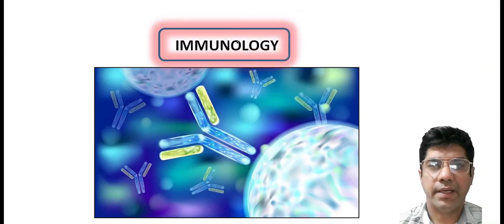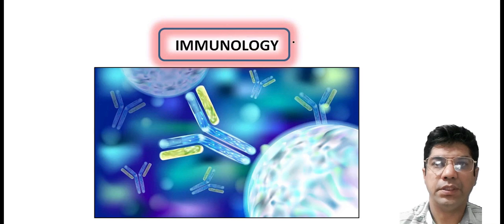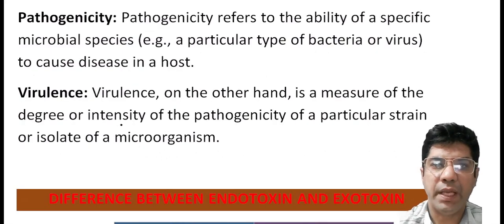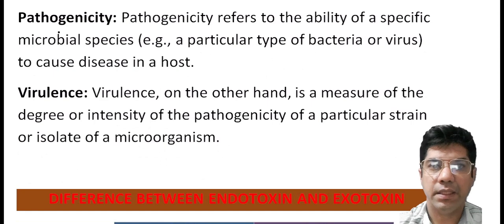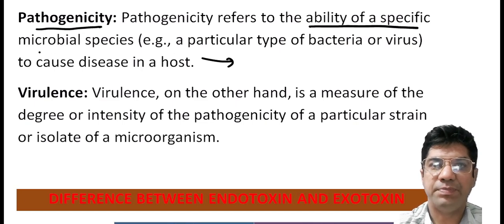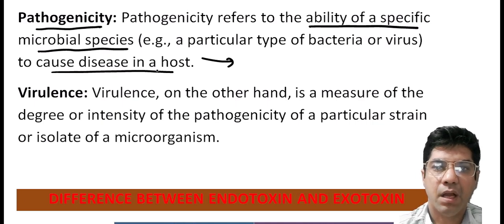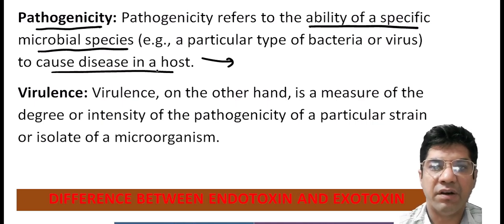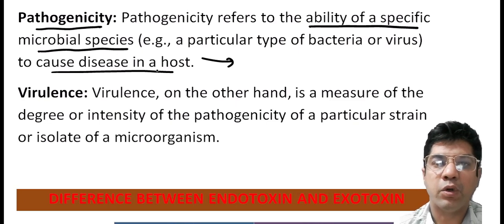Hello everyone, our next chapter is immunology. First of all, you should know what is pathogenicity. Pathogenicity means the ability of microorganisms to cause disease in a host — it's the ability of a specific microbial species to cause disease. For example, the pathogenicity of Streptococcus pyogenes is its ability to cause throat and other infections.